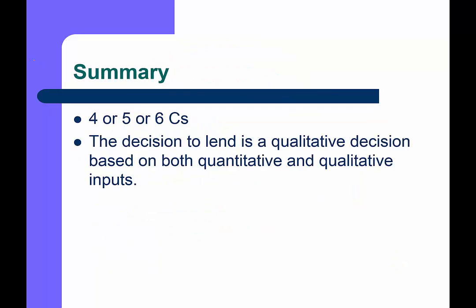To wrap up: we've talked about four, five, or six Cs. But the most important point is that the decision to lend is ultimately a qualitative decision. We have lots of quantitative numbers, particularly around capacity, performance, and coverage ratios. But character and conditions are not purely numerical — they are qualitative. Like many finance decisions, the lending decision is a qualitative judgment based on a combination of both quantitative and qualitative inputs.